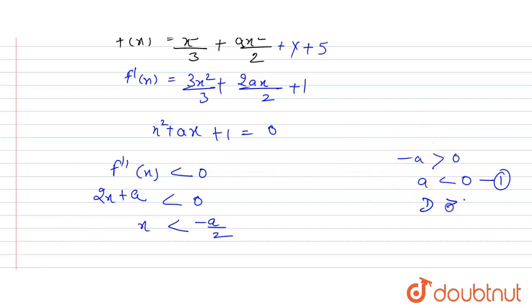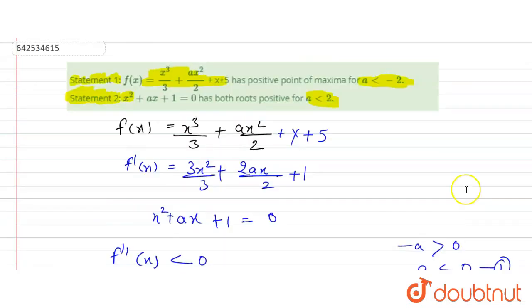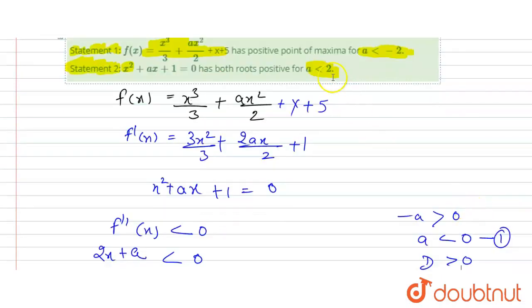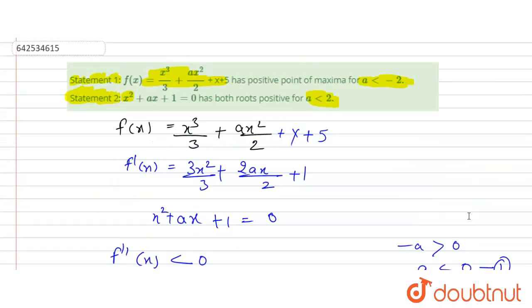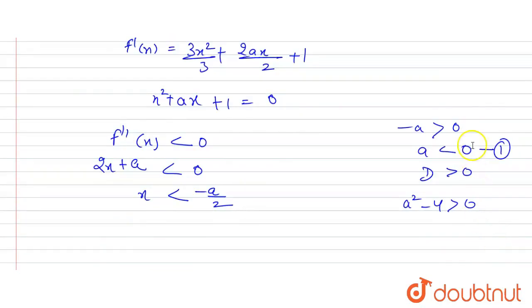The discriminant D must be greater than 0. We have a < -2, so D = a² - 4 > 0. This gives us a² > 4.